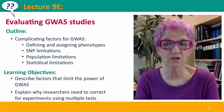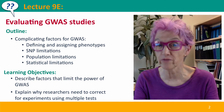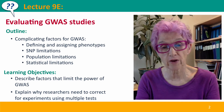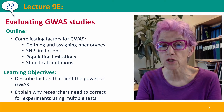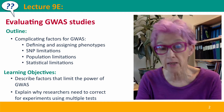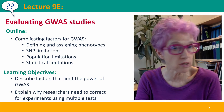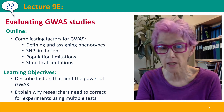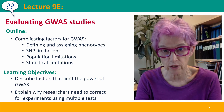Hi, everyone. Welcome back to Useful Genetics. This is Lecture 9E, where we're going to complete our revisit of genome-wide association studies by talking about how to evaluate them. There are a number of complicating factors that a good study has to address: how phenotypes are defined and assigned, the limitations of the SNPs available, the limitations in the population, and statistical limitations. We're going to talk about all of these briefly.